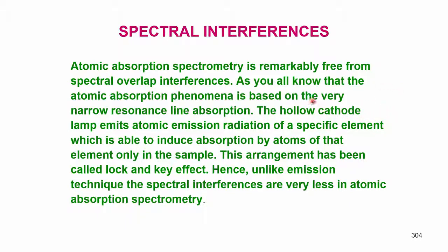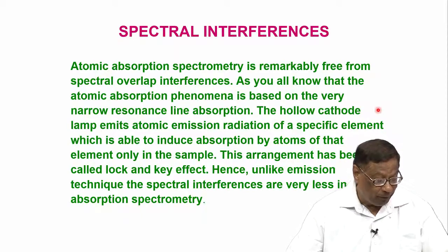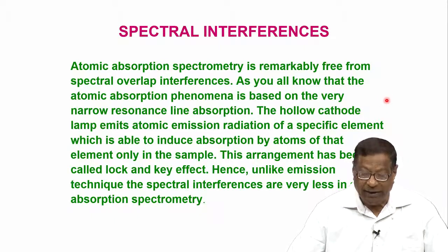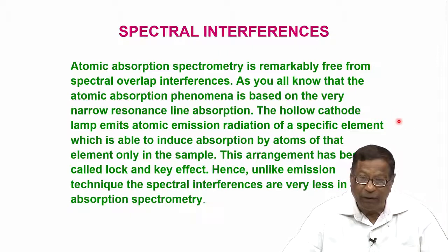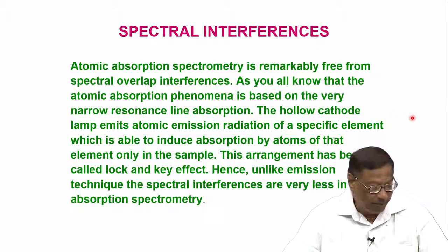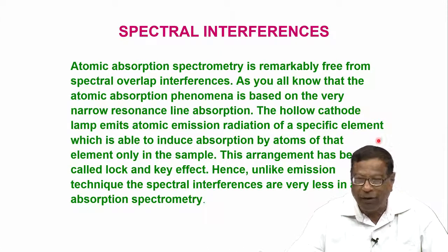We have been discussing atomic absorption and spectral interferences. The resonance lines are most important because AAS is specific for each element due to the resonance line. But sometimes the resonance lines of two different elements are almost similar or exactly match in terms of frequency and wavelength. When they match, the monochromator is not able to distinguish between the two different atoms' resonance lines, resulting in enhancement of the signal.